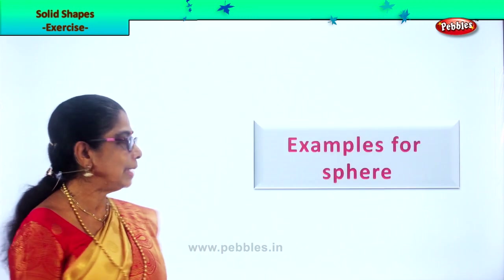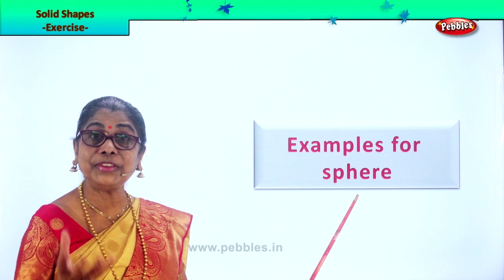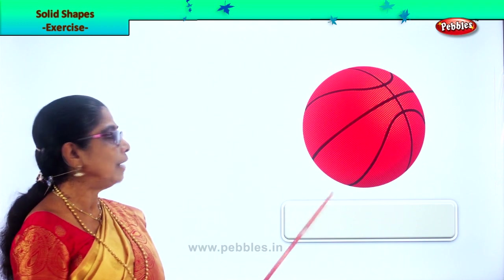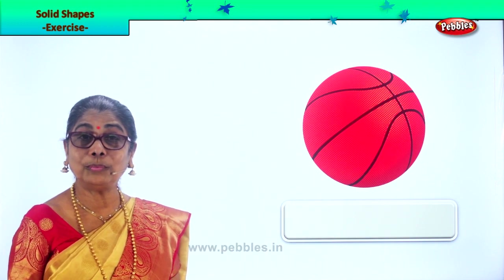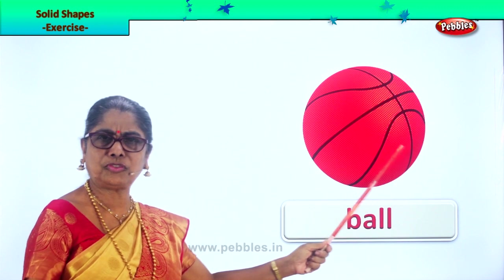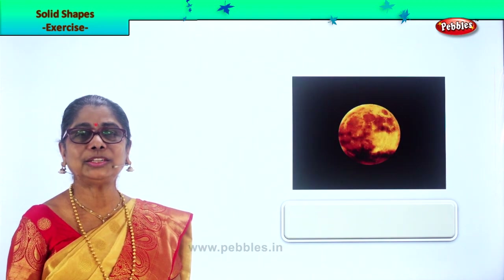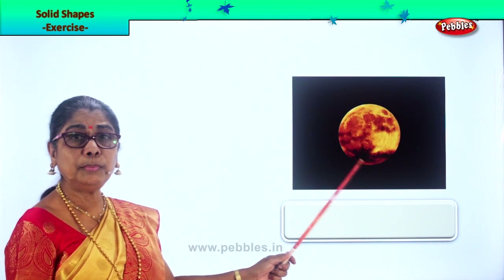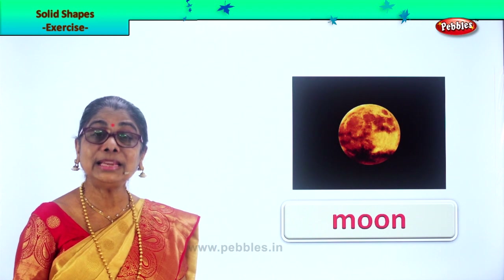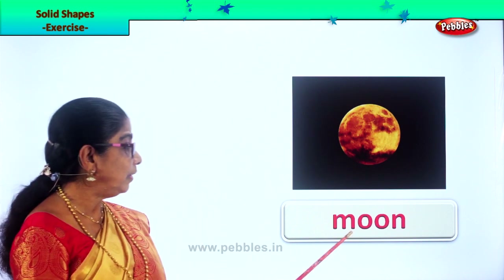Let's look at some more examples — now we are going to look at examples for a sphere. Our first one is a ball, a football. You use this in the playground. This is a solid football, an example of a sphere. What about the moon? What about the planets? The moon and planets are in the shape of a sphere. What about our Earth? Its shape is also a sphere. Very good.